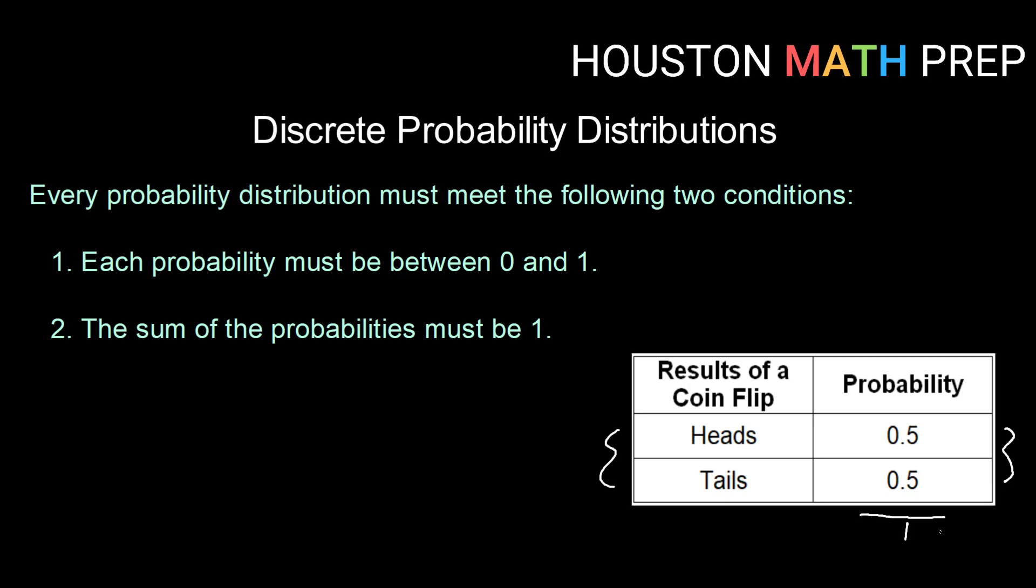So let's check out this example here. Very basic. We've got the results of a coin flip. Well, when we flip a coin, there are two outcomes. It can land with heads face up or it can land with tails face up. So there we have our outcomes listed.